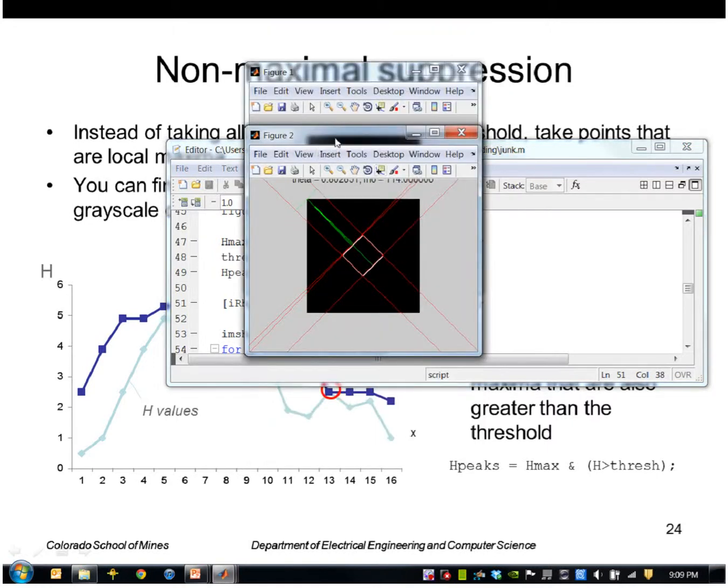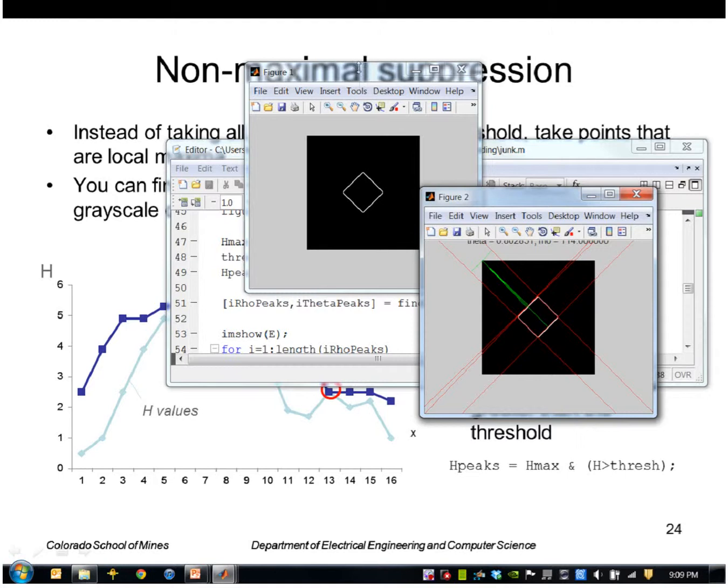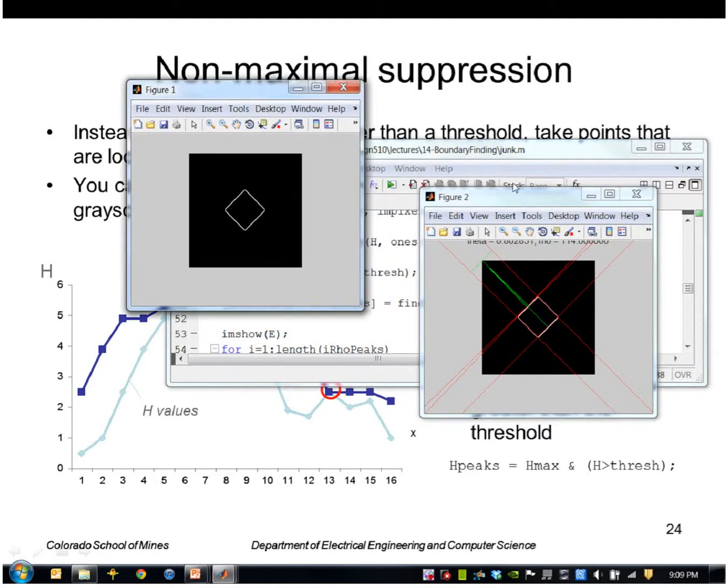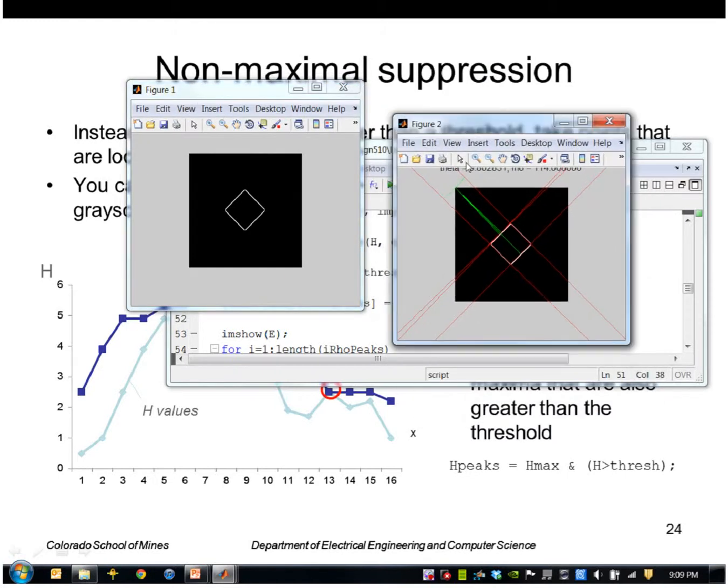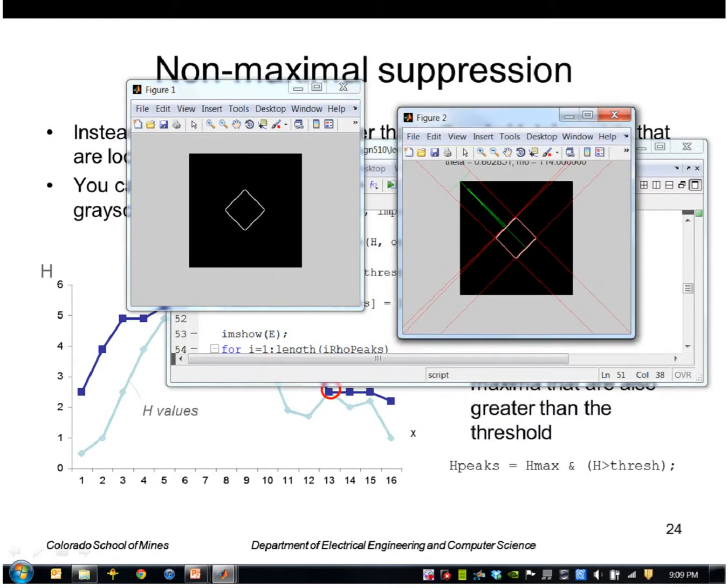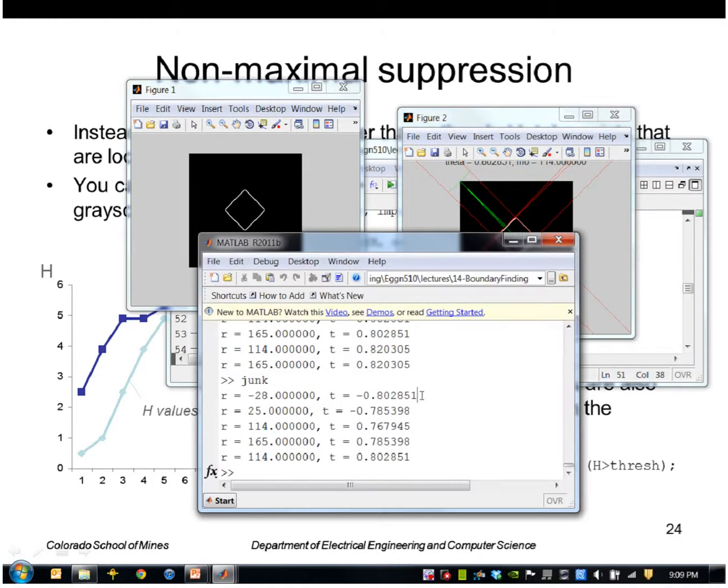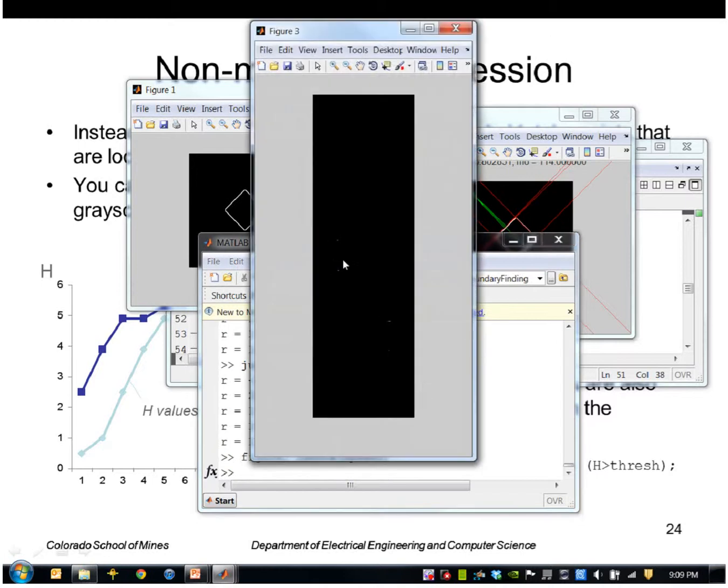And then I'll go ahead and find nonzero values in H peaks. So this does much better. I still get two lines here, but only one in the other direction. If I just have very few peaks, like two points here, and it looks like three points here.